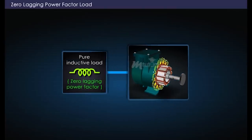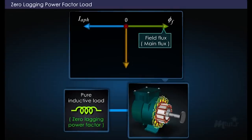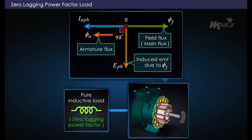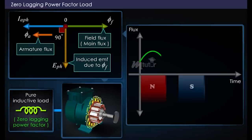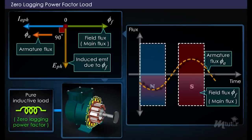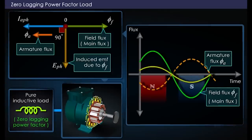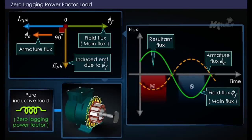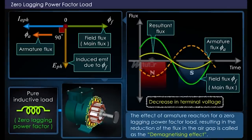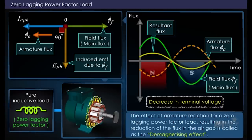When an alternator is connected to a purely inductive or zero lagging power factor load, the armature current I_aph lags the induced EMF E_ph by 90 degrees. Hence, the flux produced by that current also lags the voltage by 90 degrees. Thus, both the main flux and armature flux are exactly in opposite directions. From the waveforms, the armature flux tries to cancel the main flux under each pole, leading to a reduction in the average flux in the air gap. This decreased flux leads to a decrease in the induced EMF and results in a considerably large drop in the terminal voltage. Such an effect is called the demagnetizing effect.